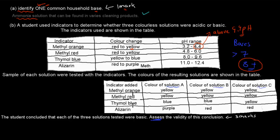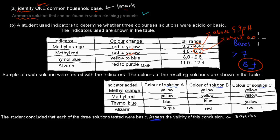The next indicator, methyl red, turned yellow for solutions A, B, and C. If methyl red turns yellow, that's the upper end of its spectrum, meaning a pH above 6.0. So now we know all three substances have a pH above 6.0, which is still consistent with being a base, since bases should have a pH of around 8 or higher. It's still all plausible.